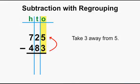Starting in the ones column, we will take 3 away from 5, which is 2. 5 subtract 3 is 2.